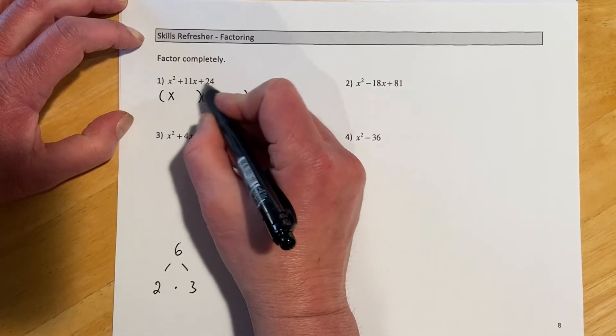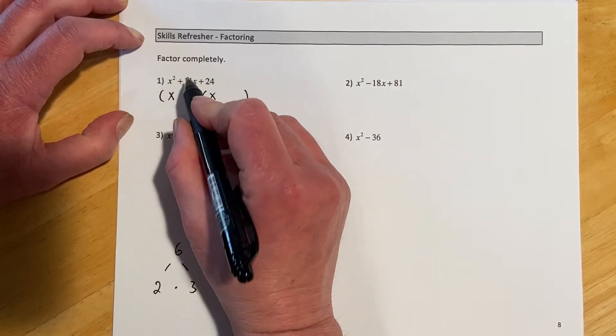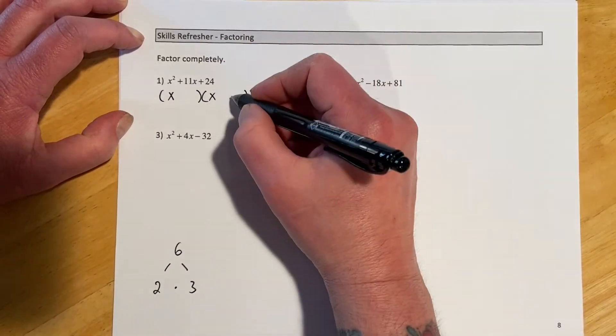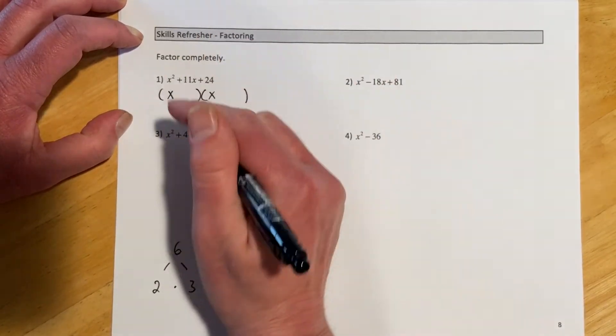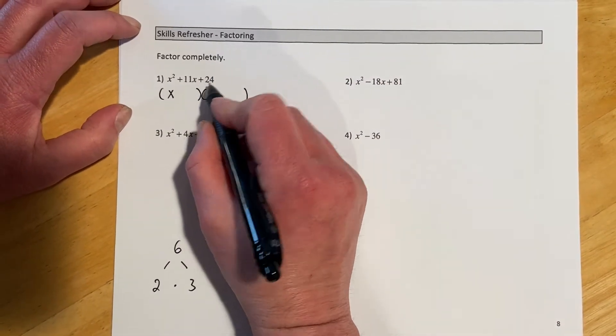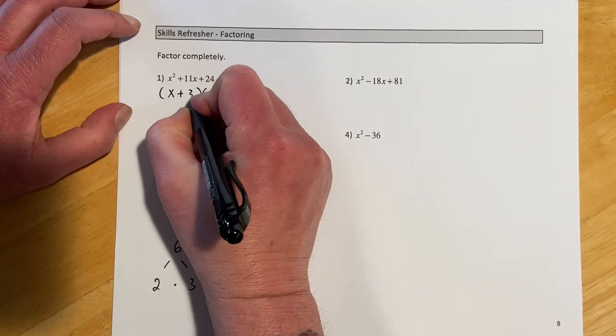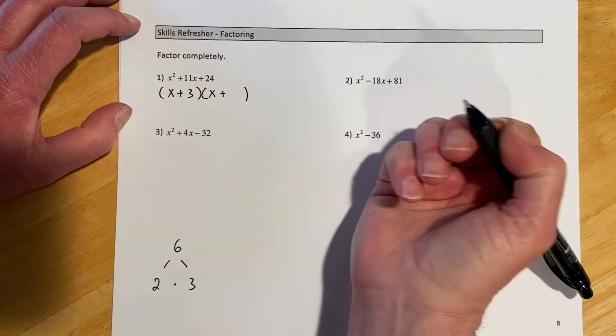And then the trick is it has to multiply to be the 24 on the end, and then the numbers have to add to be the 11 in the middle, because when you do out your FOIL you get the inside, the outside, and those terms add together. So here we're looking for two numbers that multiply to be 24 and add to be 11, which sounds like positive 3 and positive 8.